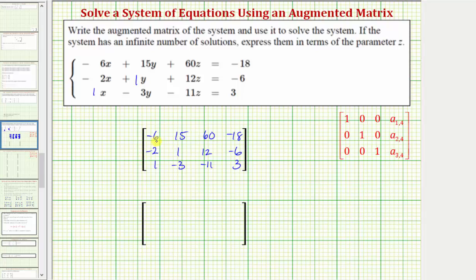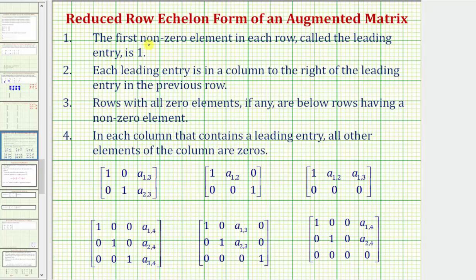Now we're going to write this in reduced row echelon form to determine the solution to the system. For a quick review, we must meet four conditions: one, the first non-zero element in each row, called the leading entry, is one. Two, each leading entry is in a column to the right of the leading entry in the previous row. Three, rows with all zero elements, if any, are below rows having a non-zero element. And four, in each column that contains a leading entry, all other elements of the column are zeros. Here are three examples of three by four matrices in reduced row echelon form: one solution, no solution (three zeros and a one in the last row), and infinite solutions (an entire row of zeros).